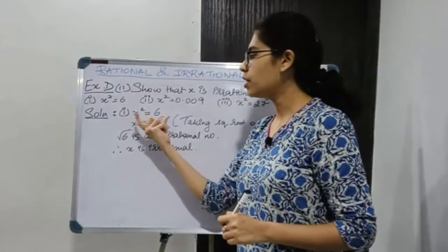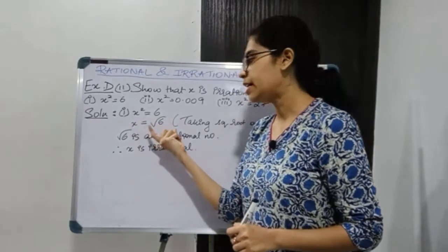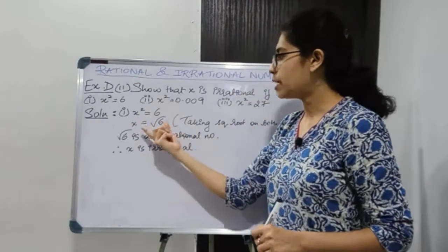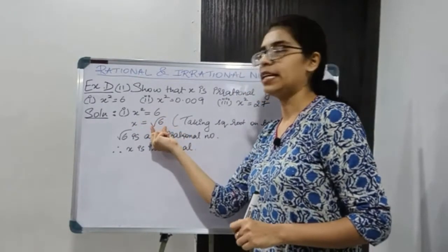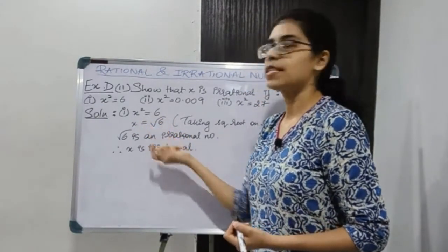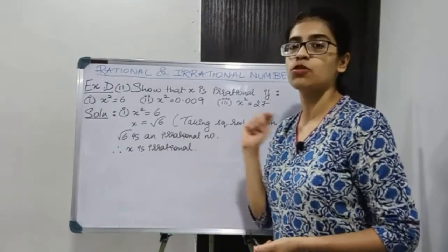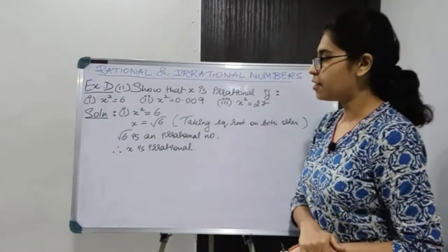x square is given, so to find x we will take square root. On taking square root, we get x is equal to root 6. Root 6 is irrational, therefore x is also irrational.